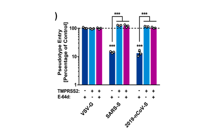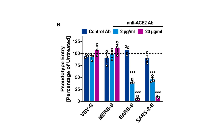When the TMPRSS2 receptor is present, the entry of novel coronavirus into the cell is much more enhanced. In the presence of an ACE2 antibody, the entry of novel coronavirus is much reduced, which confirms that the virus requires ACE2 receptors for cell entry.